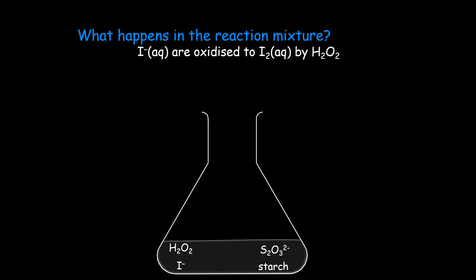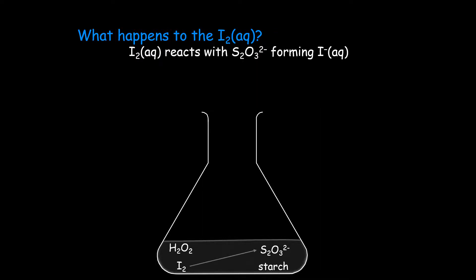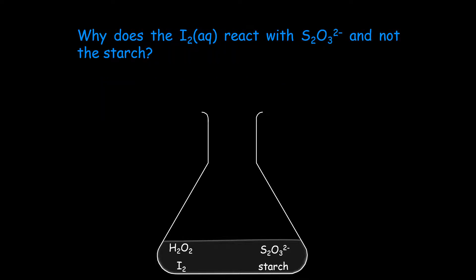The iodide ions are oxidized to iodine by the hydrogen peroxide. The iodine reacts with sodium thiosulfate forming iodide ions again. The mixture does not turn blue-black because there is no iodine to react with the starch, because the iodine reacts faster with the sodium thiosulfate than with the starch.